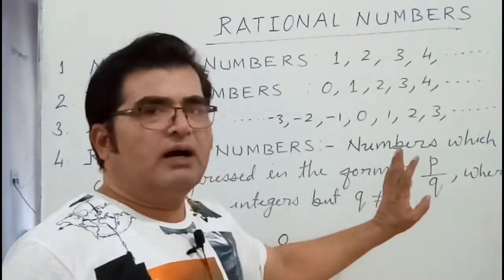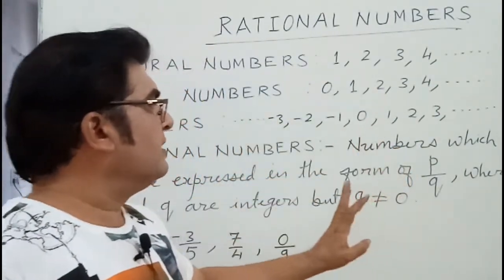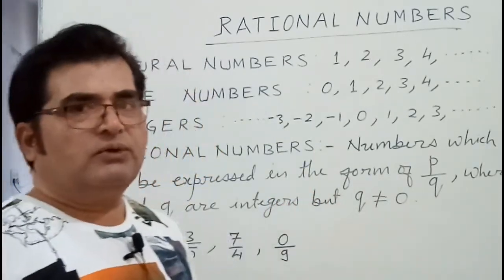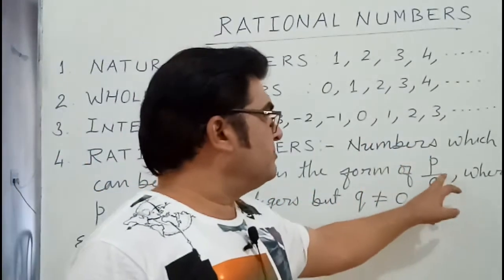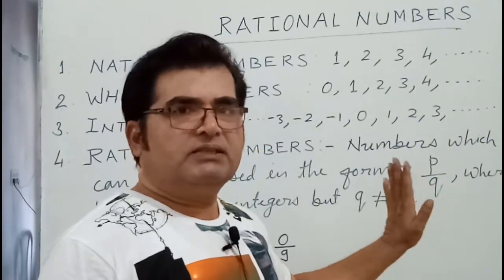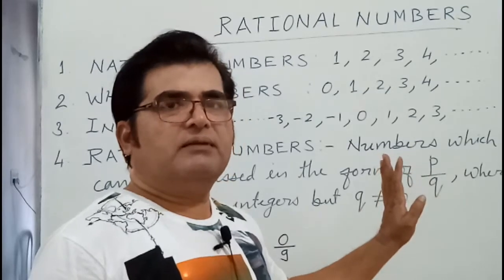Both P and Q are integers. Integers we have already defined, but in that also, the condition is Q is not equal to 0. P and Q are integers but denominator cannot be 0. Except integer 0, other integers can be.